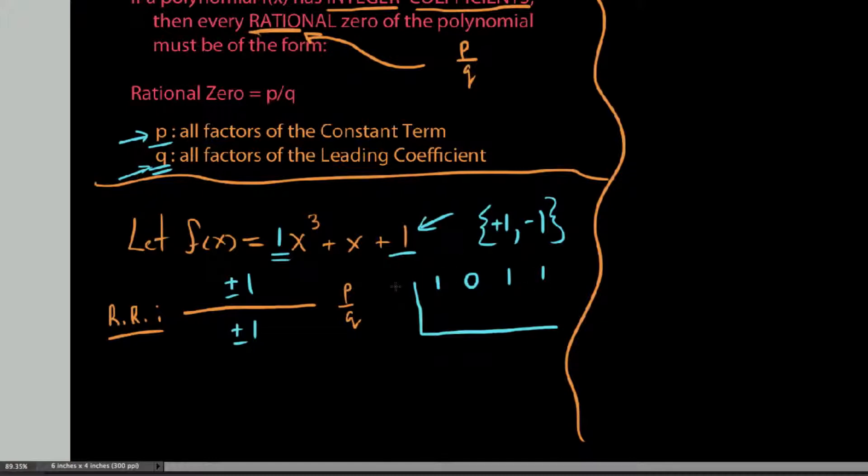We say, why don't we try to divide out 1? So 1, dropping 1 in here, we see, does it go in evenly? Bottom line is this. We say 1, 1 times 1 is 1, 0 plus 1 is 1, 1 times 1 is 1, 1 plus 1 is 2, 1 times 2 is 2, and 1 plus 2 is 3.